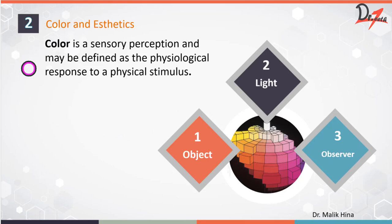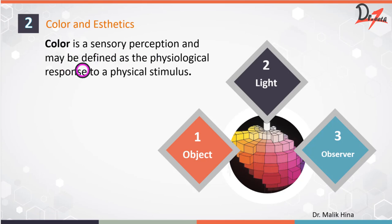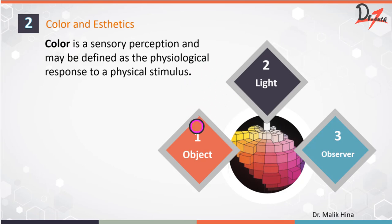Color is a sensory perception and it may be defined as the physiological response to a physical stimulus. In order to appreciate color, three conditions have to be satisfied: we need to have an object — obviously what we will see — then we need to have a light, and there has to be an observer.